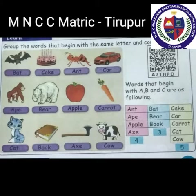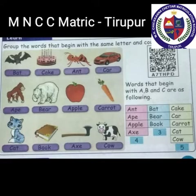Group the words that begin with the same letter and count them. Words beginning with A: Ant, App, Apple, and Axe. Words beginning with B: Bat, Beer, Book. Words beginning with C: Cake, Car, Carrot, Cat, and Cow.